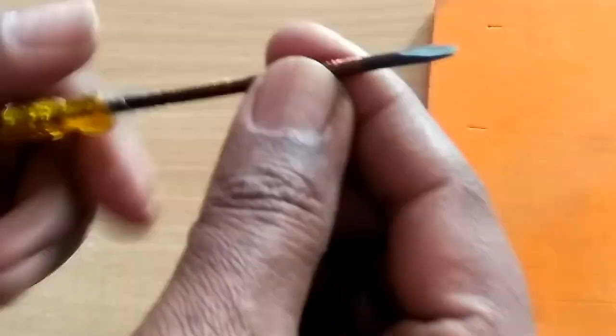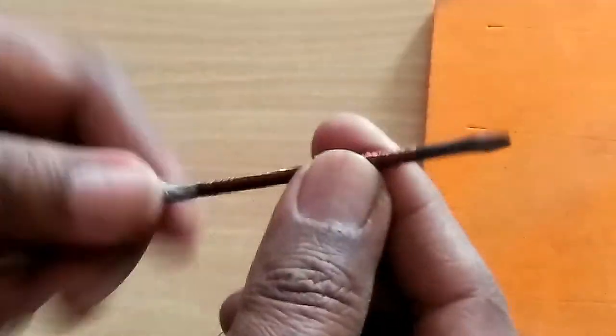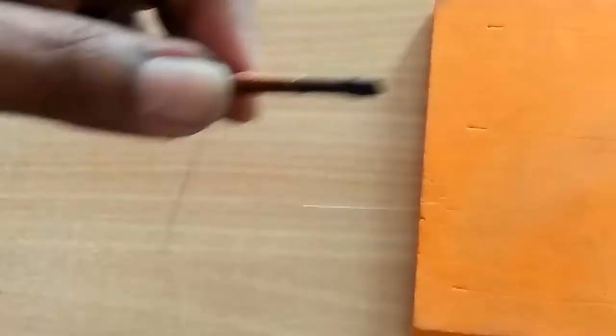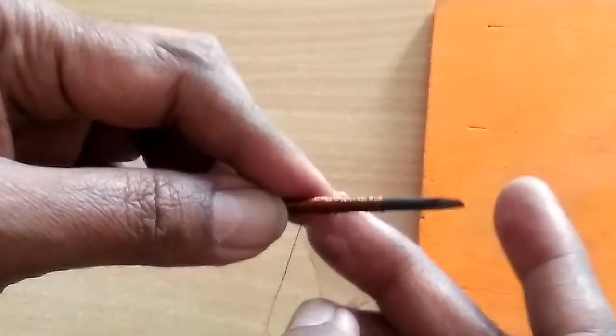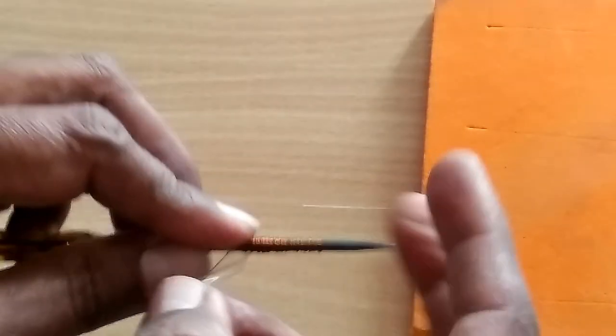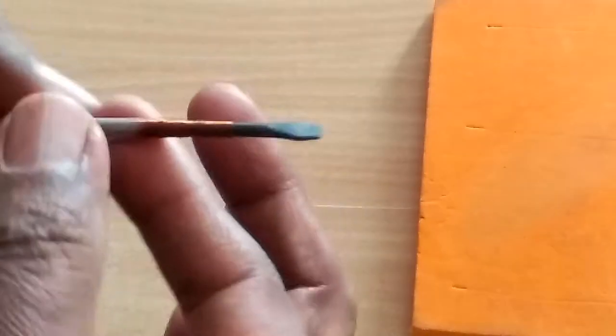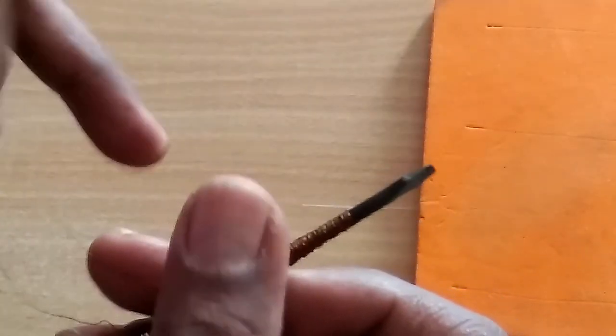The more wire that is wound on the screwdriver, the more powerful the magnet will be. Keep some extra wire at the other end so that we can connect it to the battery. And now attach a cello tape over the wire so that it stays in place.